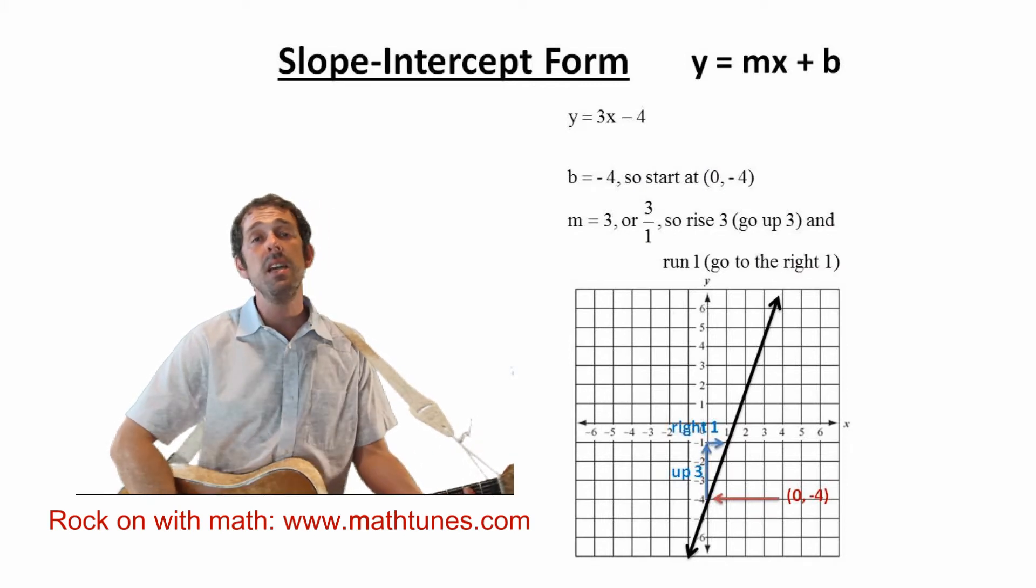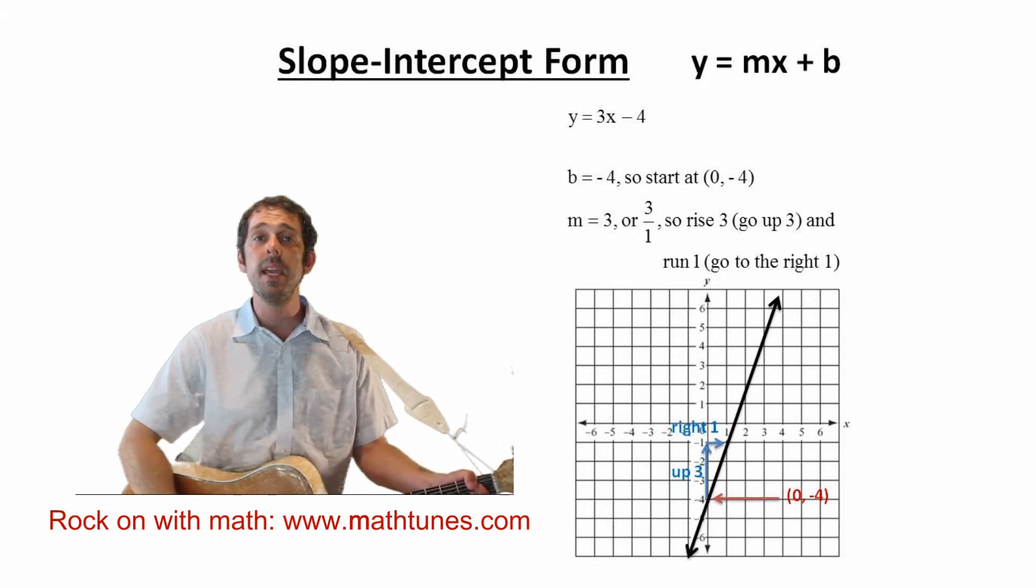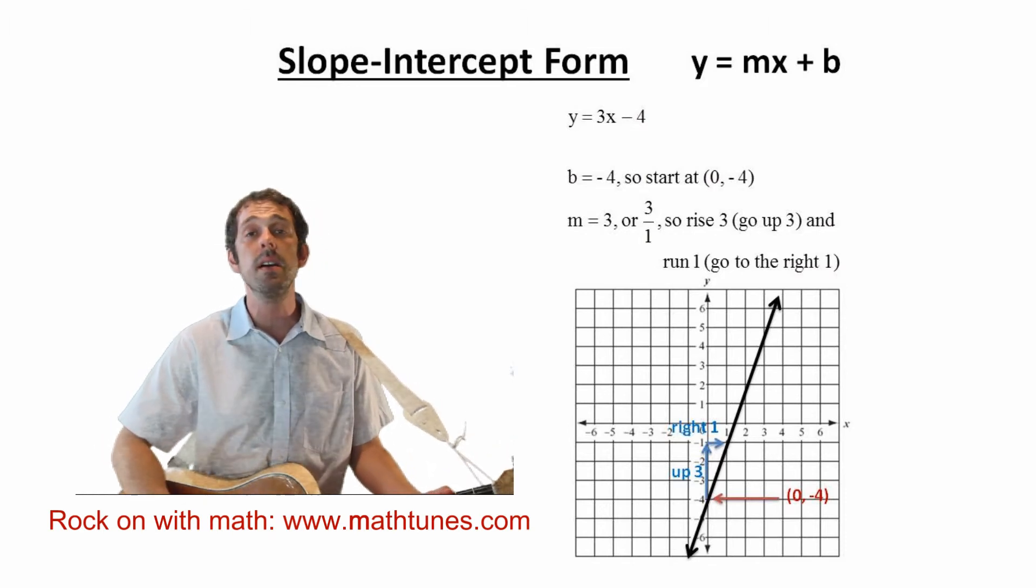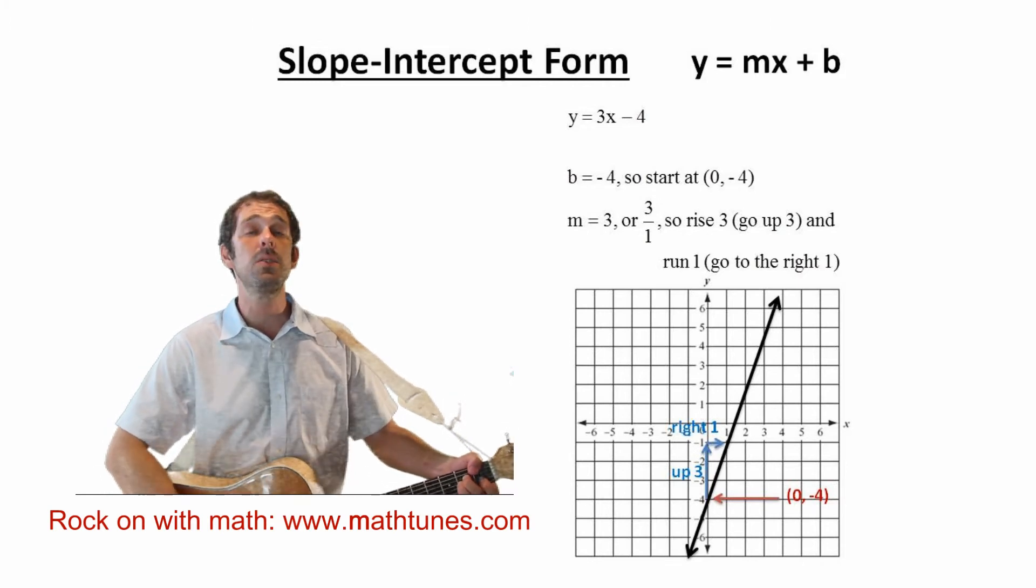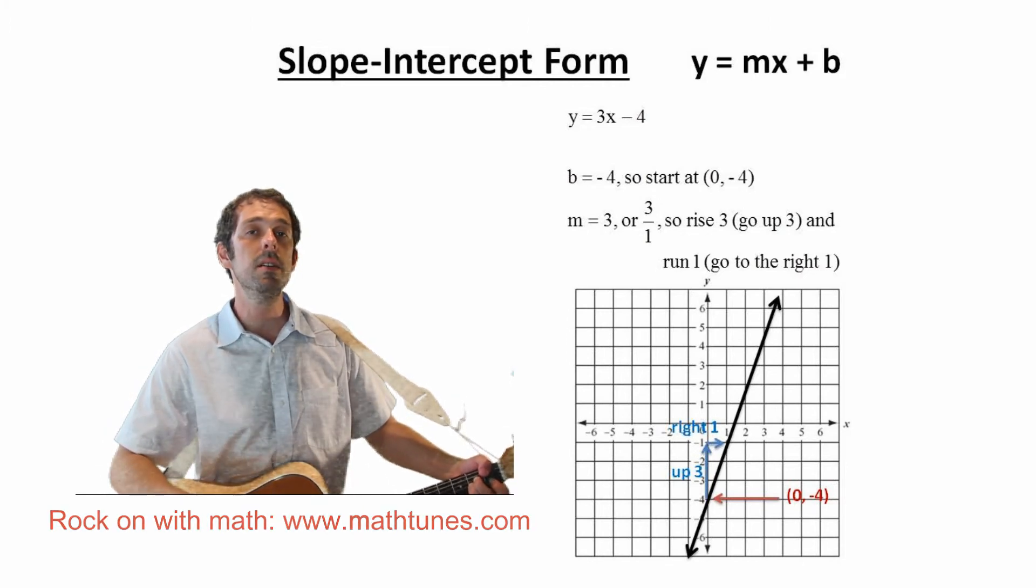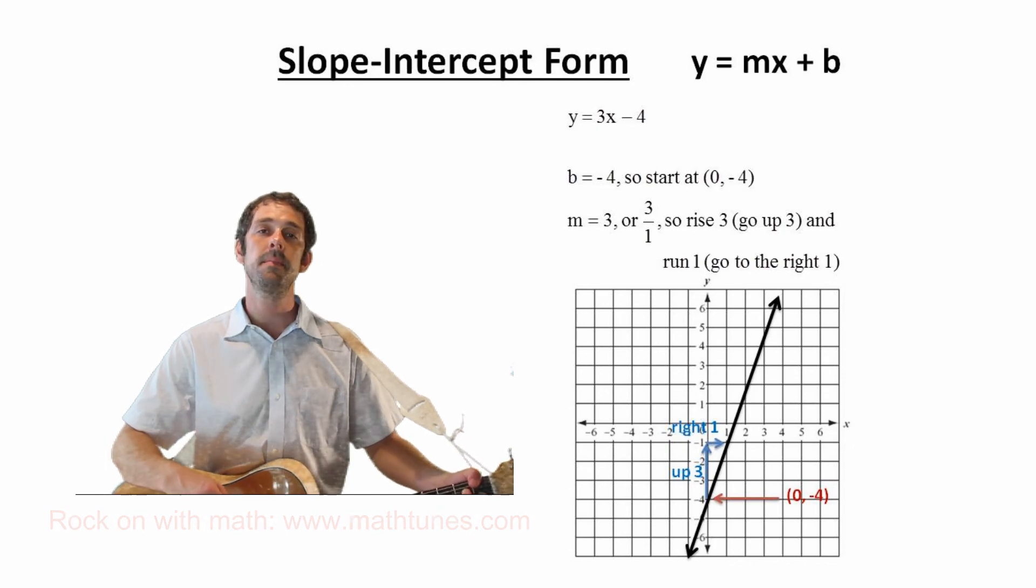Start at (0, b), and then you're gonna calculate rise over run. Get it? Please get it, get it.